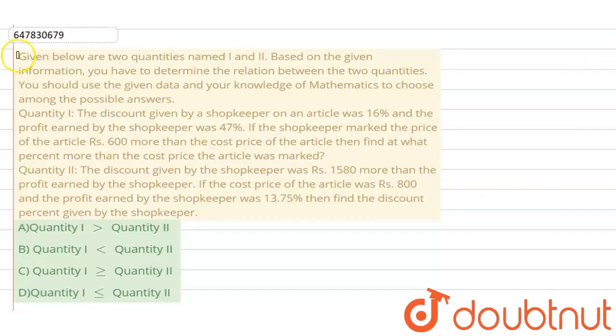Hello guys, welcome to Doubtnut. Our question is: given below are two quantities named I and II. Based on the given information, you have to determine the relation between the two quantities. You should use the given data and your knowledge of mathematics to choose among the possible answers.